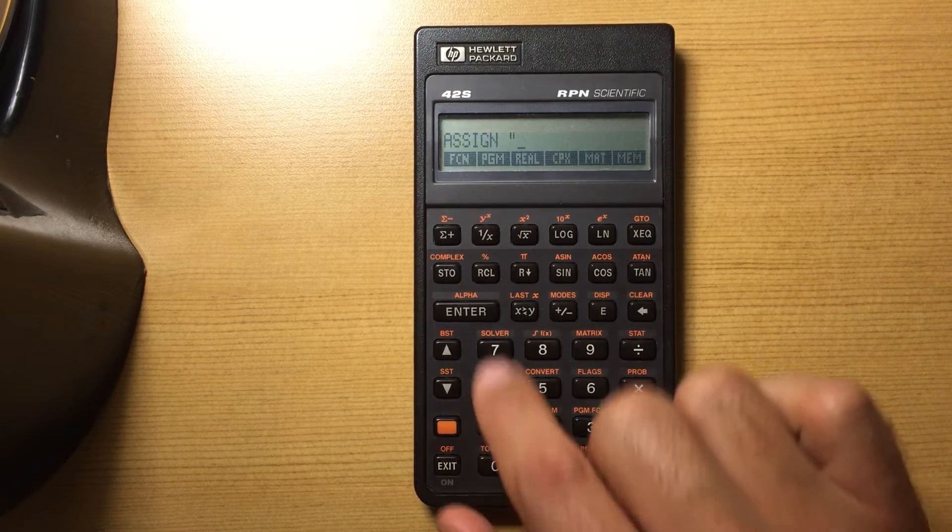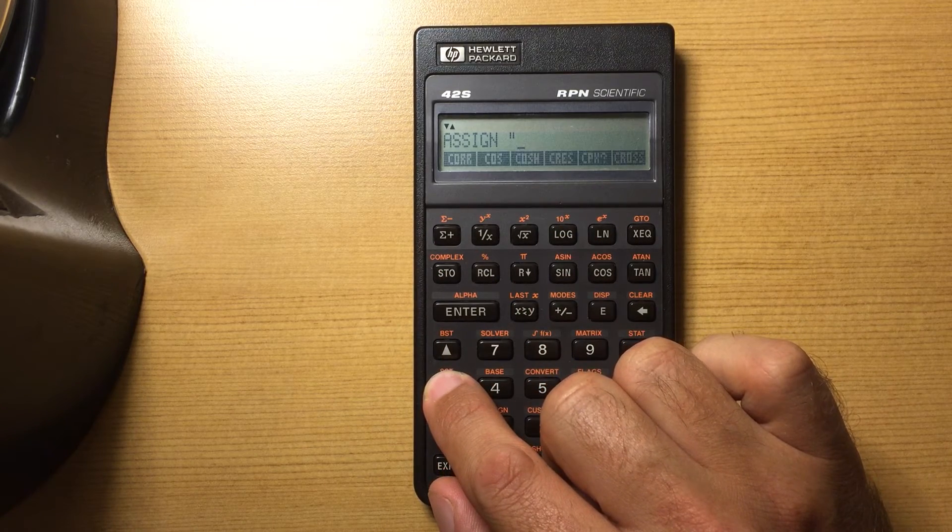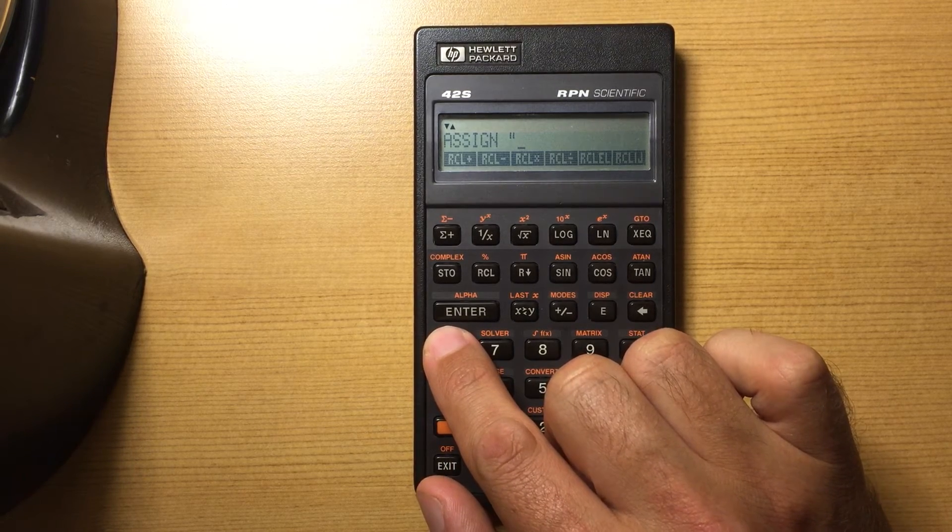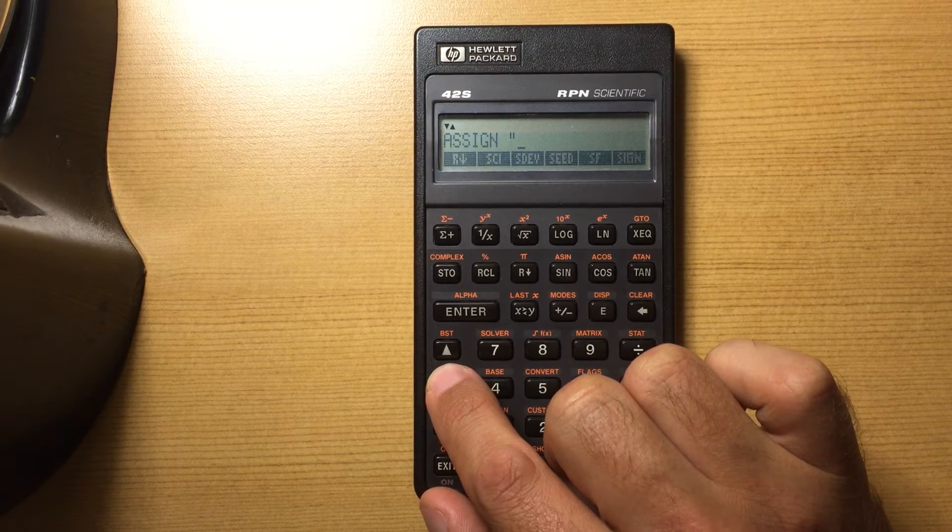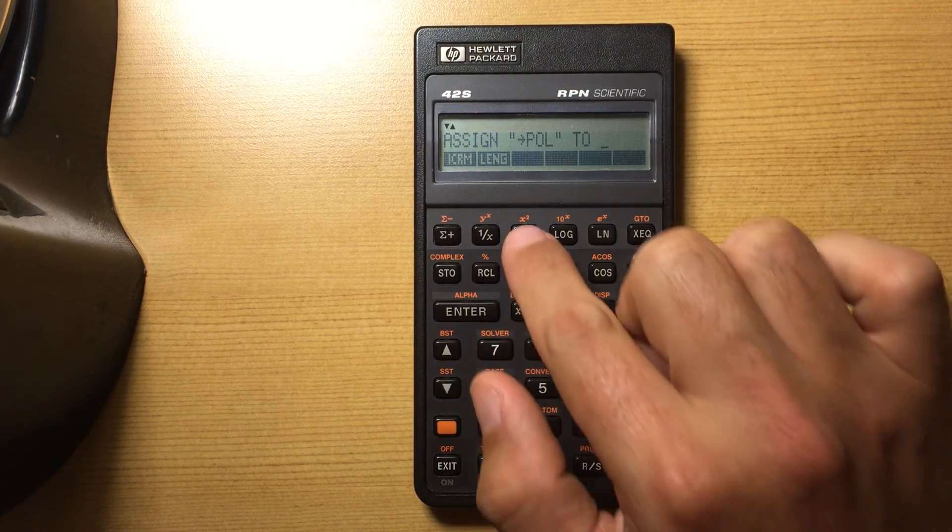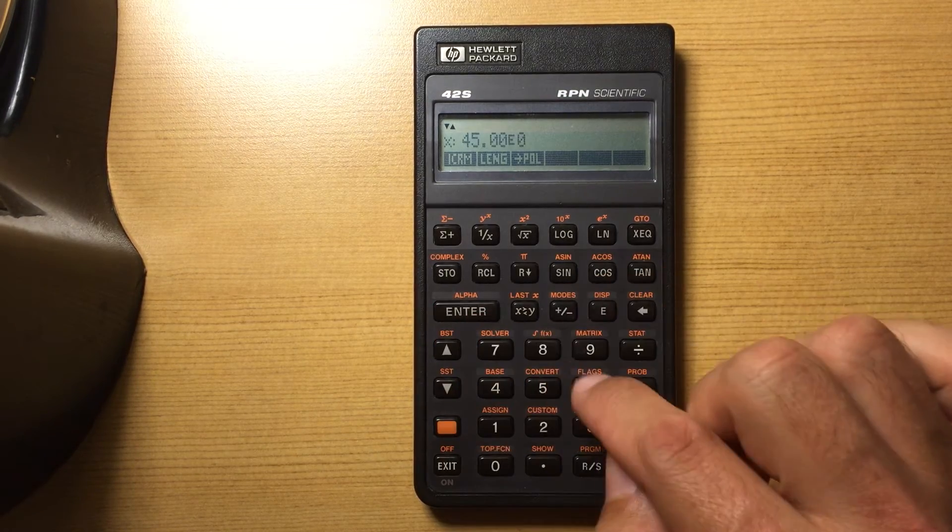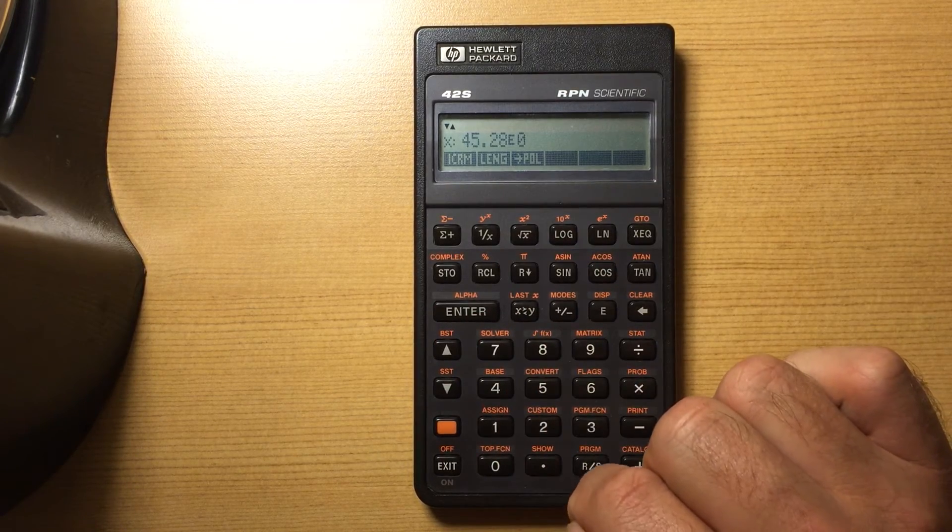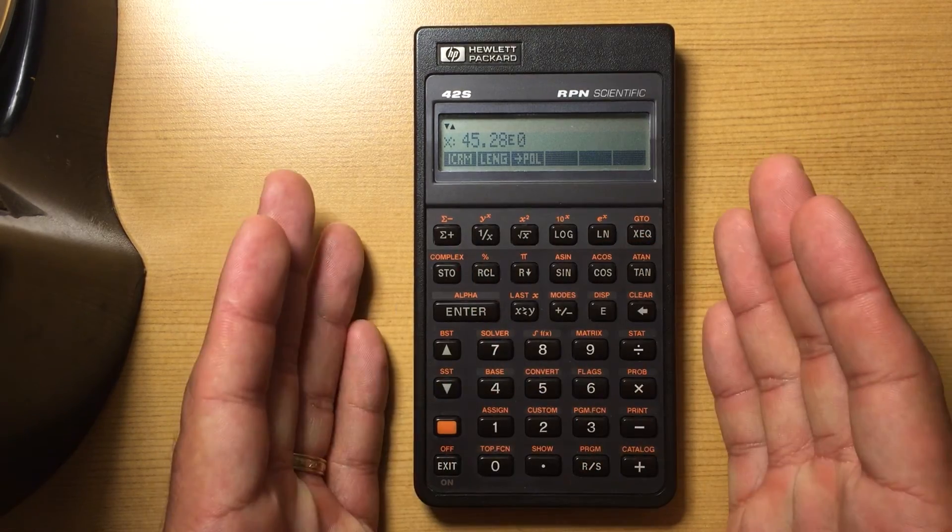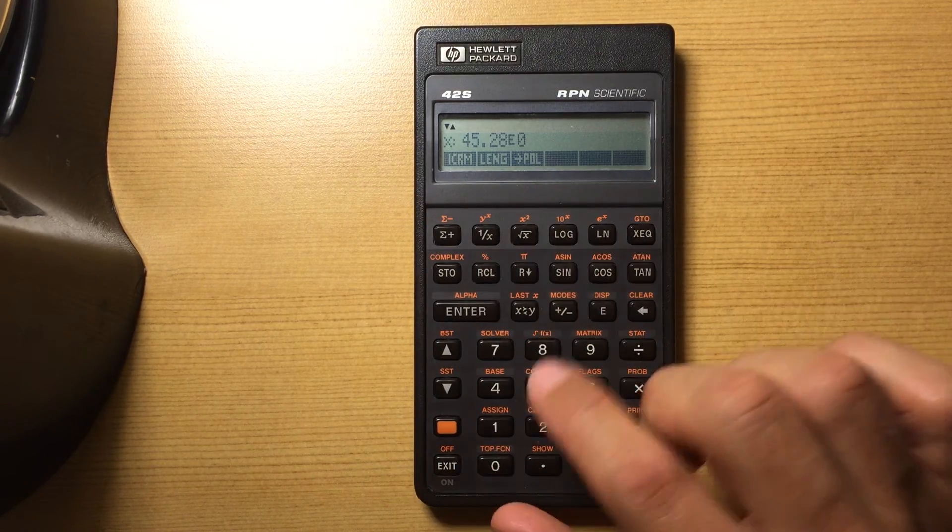Or if I'm going to do rectangular to polar conversions all the time. I can put polar on my menu. And this menu here, I can keep up, so I can go 45, 5, convert that to polar. Or put in the rectangular function on a different button, and I can keep this custom menu up, and then do my common calculations using that custom menu if I want to.